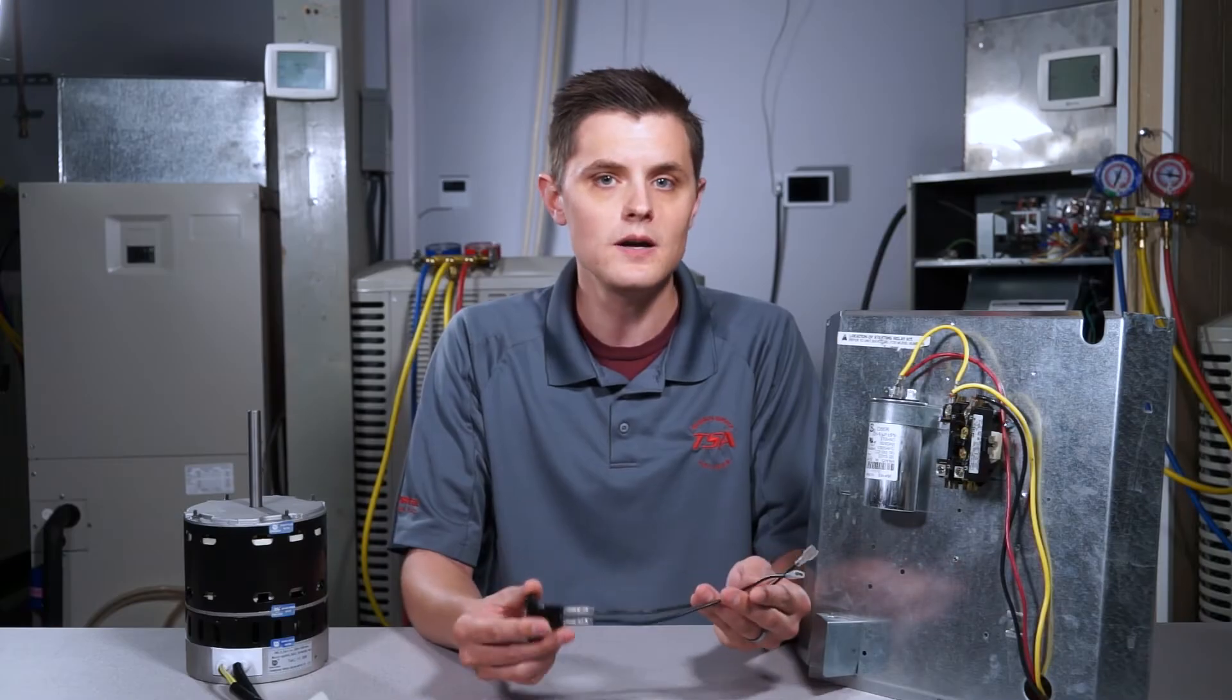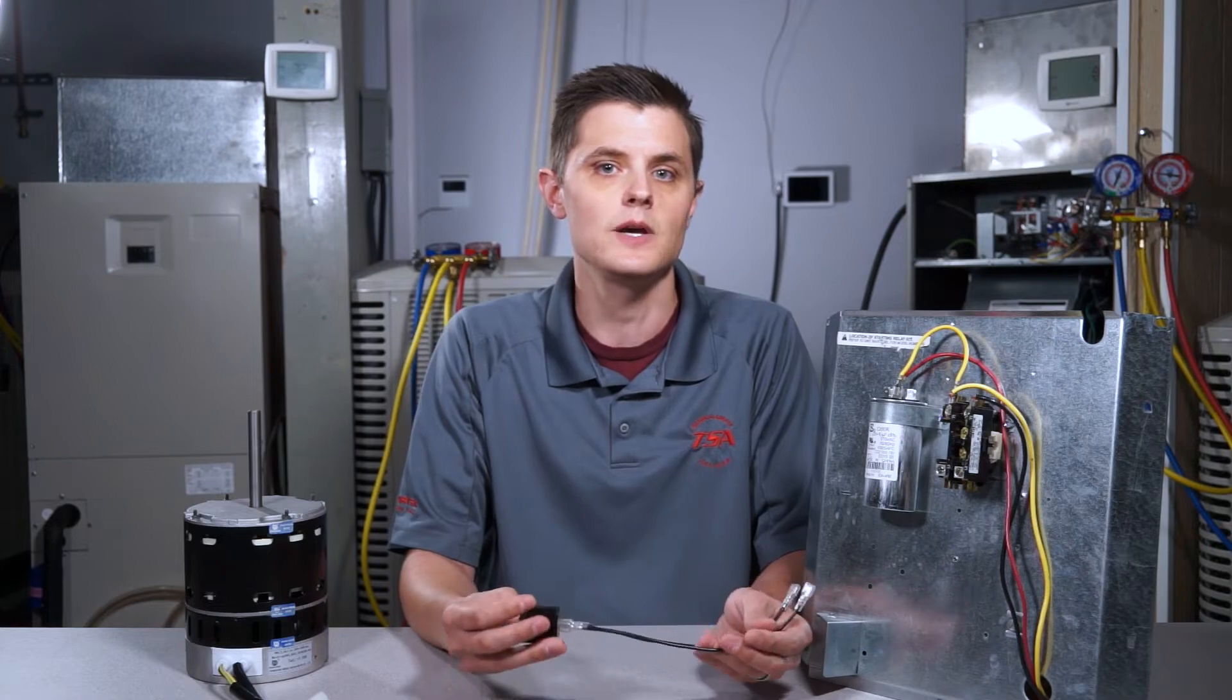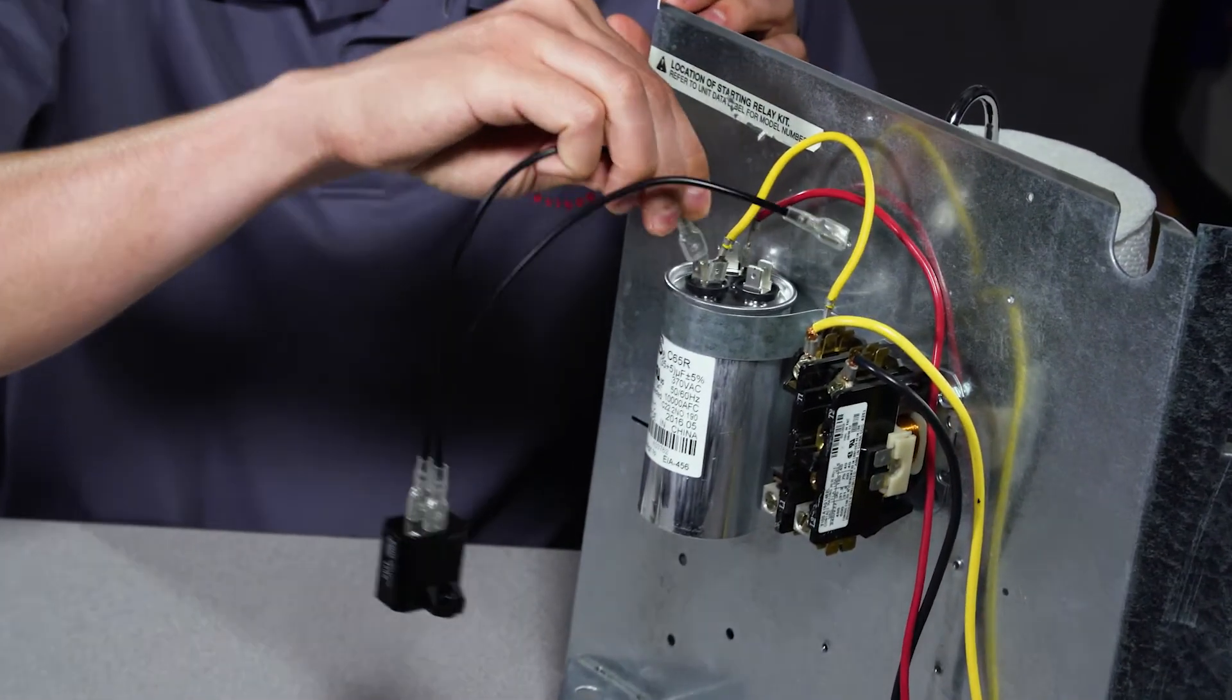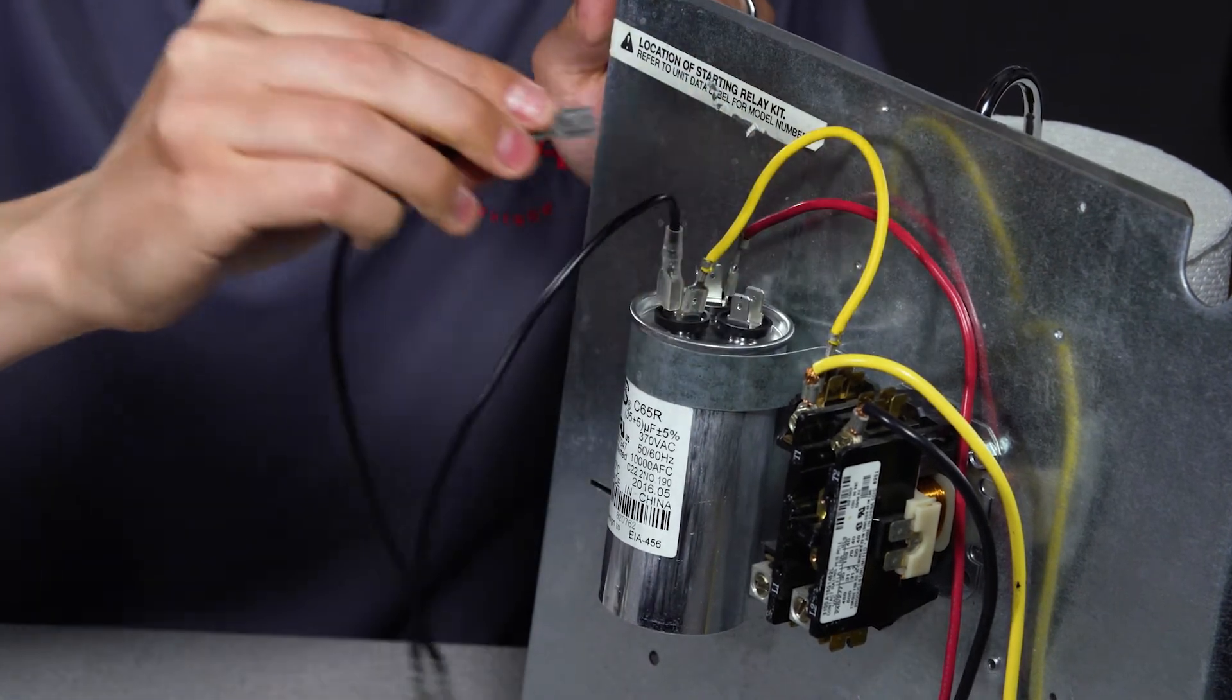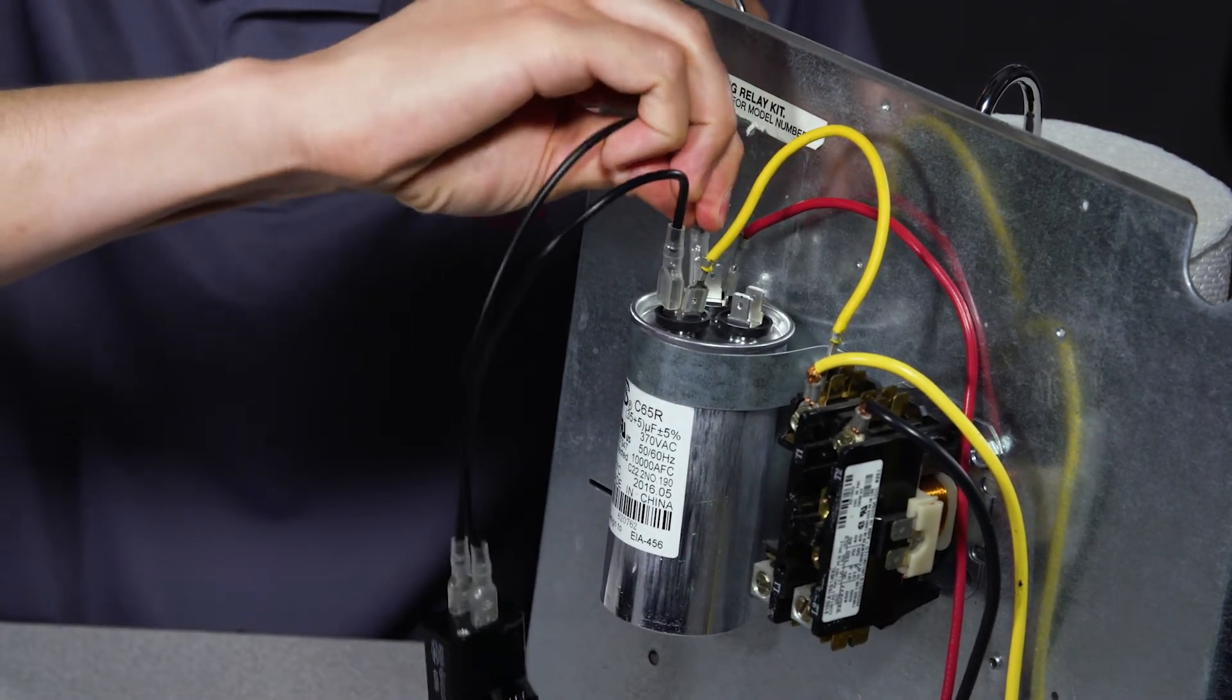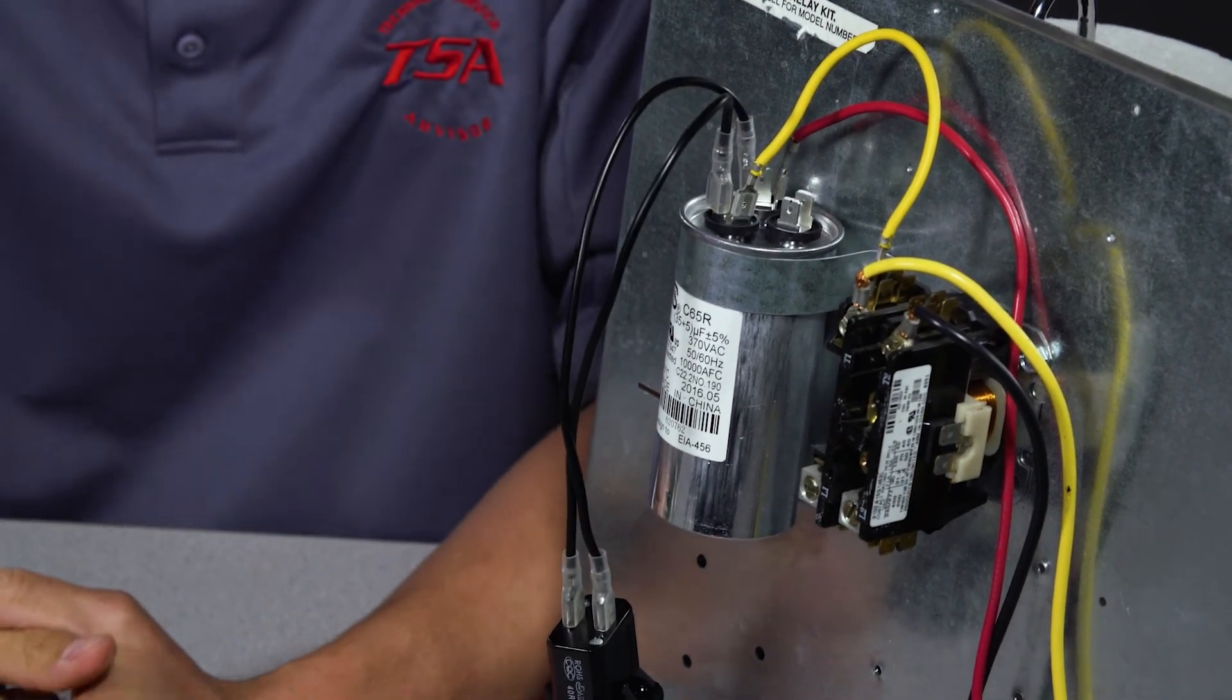When you wire this part into the unit, it wires in exactly the same as the previous part. You'll pick one of your two wires—one will go to Common and one will go to Herm. It doesn't matter which wire you pick, just Common and Herm on the capacitor and you'll be good to go.